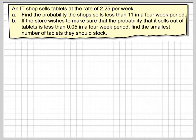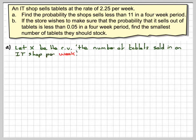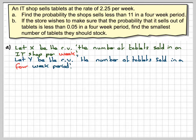Right, there are two parts. The time interval in the question is per week, so you need to make note of that. So let X be the random variable of the number of tablets sold in an IT shop per week. X will be Poisson 2.25.